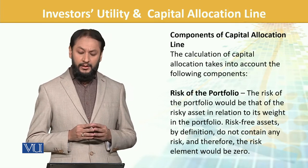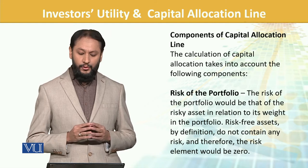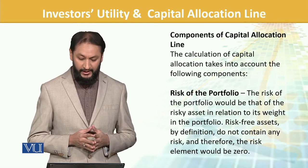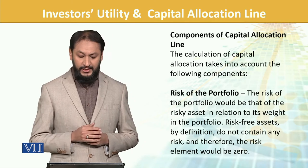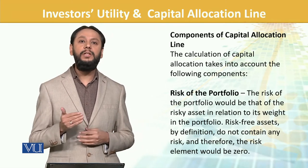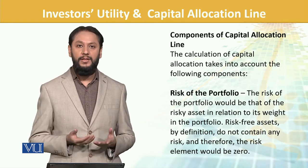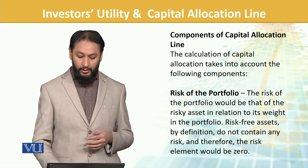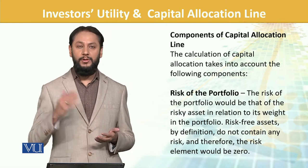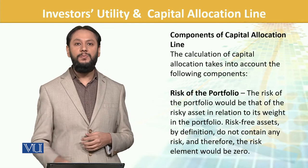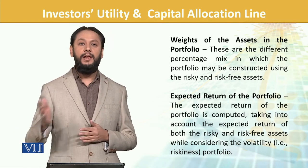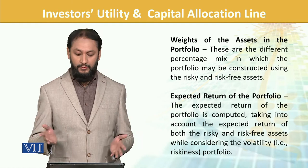Components of CAL: the calculation of CAL takes into account the risk of the portfolio — not an individual's risk, but the whole portfolio's risk. This relates to the risky asset in relation to the weights in the portfolio. Basically, how much weight the risky elements have in a portfolio will determine their impact — how that is being captured in the risk of the whole portfolio. Since the risk-free component has no volatility, only the risky portion's weight matters. The weights of assets in the portfolio — how much is placed in risky and how much in risk-free — that weight assignment helps us here.